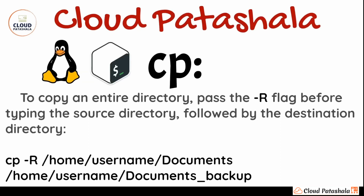To copy an entire directory, use the -R flag: cp -R source_directory destination_directory. This is generally used for taking backups of an entire folder structure or file system. The -R flag enables recursive mode of copying, which copies both files and folders seamlessly.